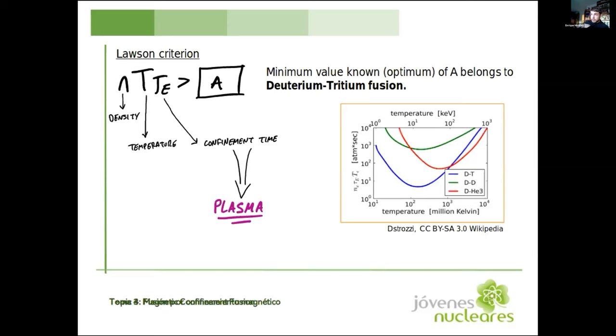We need to make this product large enough. We know some methods to increase the density, we know some processes to increase the temperature, but how do we increase the energy confinement time of a system? That's a bit trickier, and we take advantage of the fourth state of matter, which is called plasma.